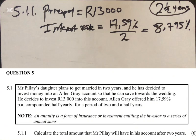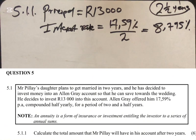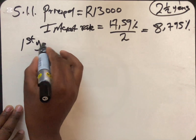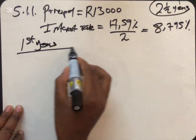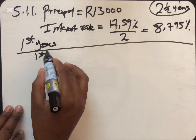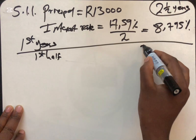Under compound interest, the interest is calculated from the accumulated amount. Because it's two years and each year has two halves, we are going to do the calculation four times — two halves for the first year and two halves for the second year.